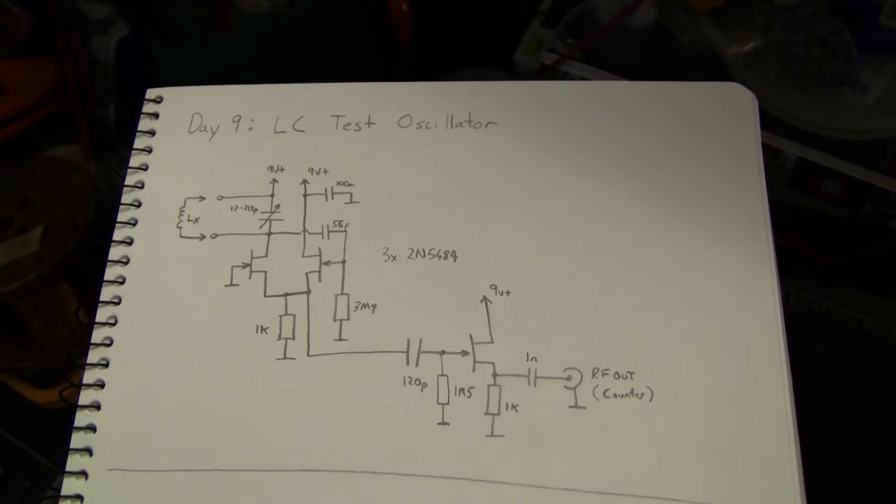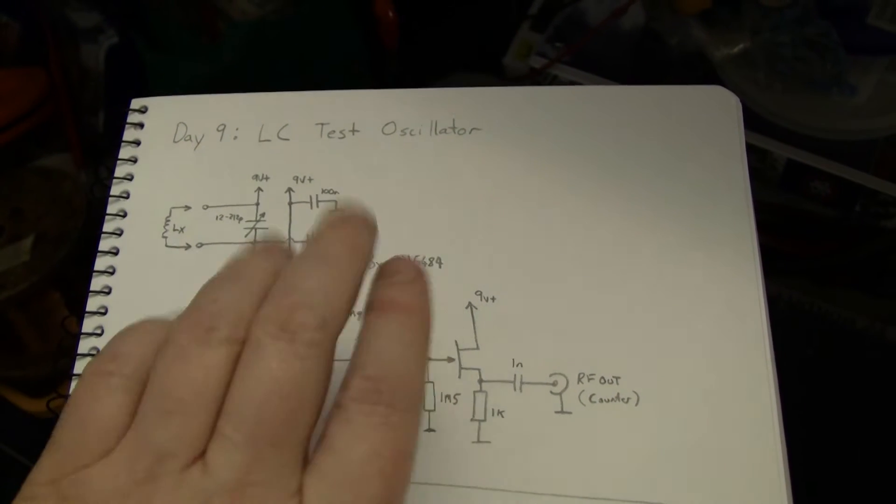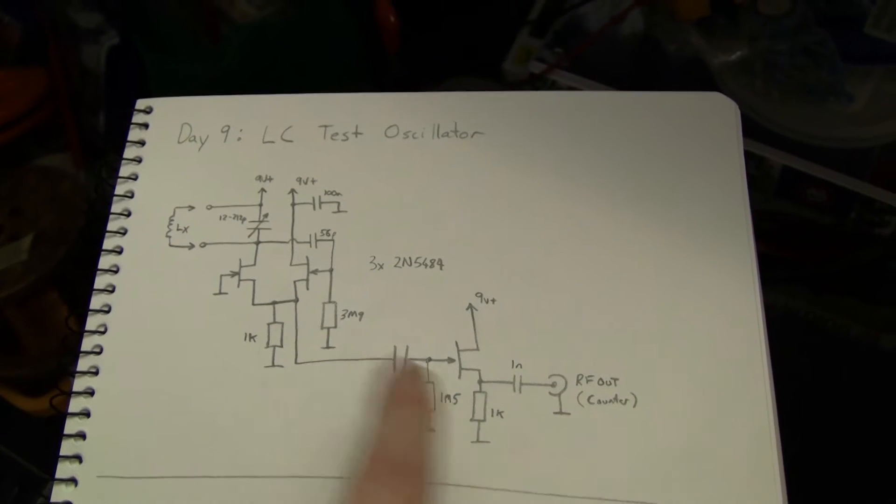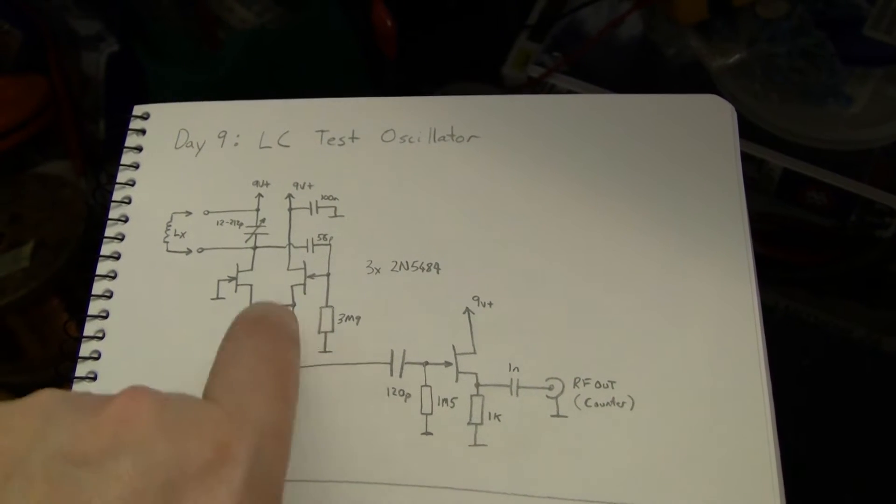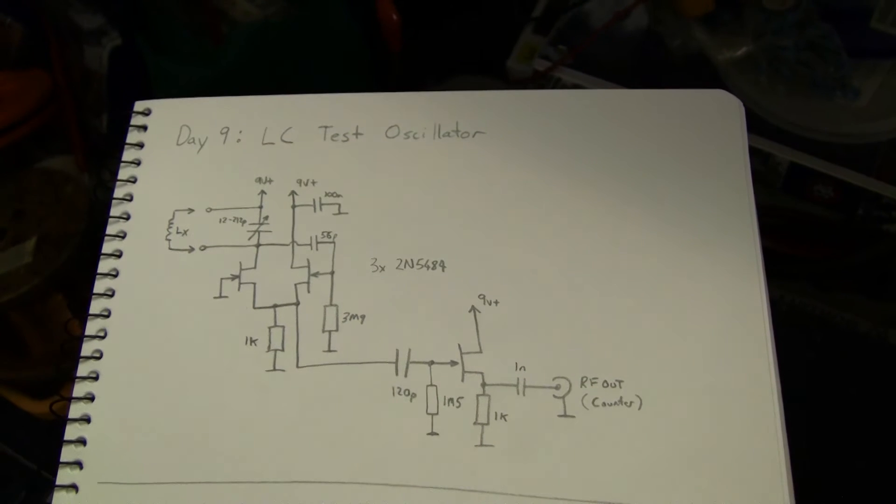It takes three JFETs. Well, you really only need two, but it's nice to have the buffer. You can also pick off some of the signal and drive a meter, and it becomes a dip meter as well.